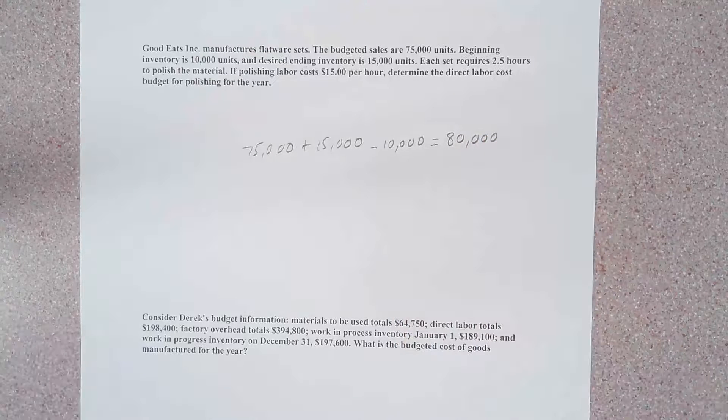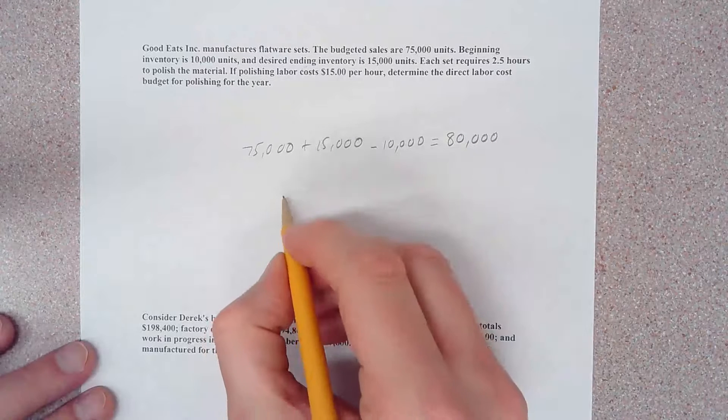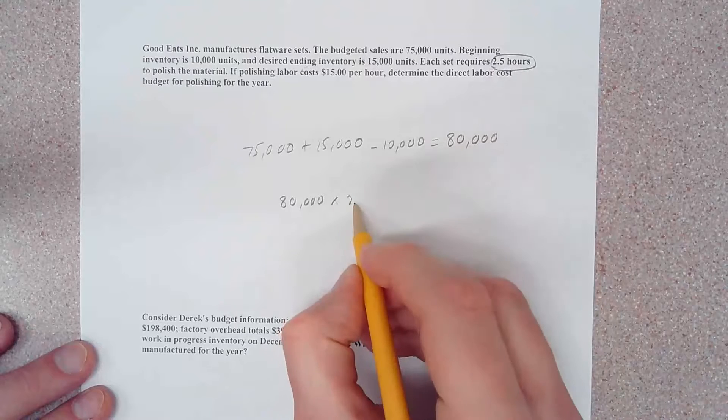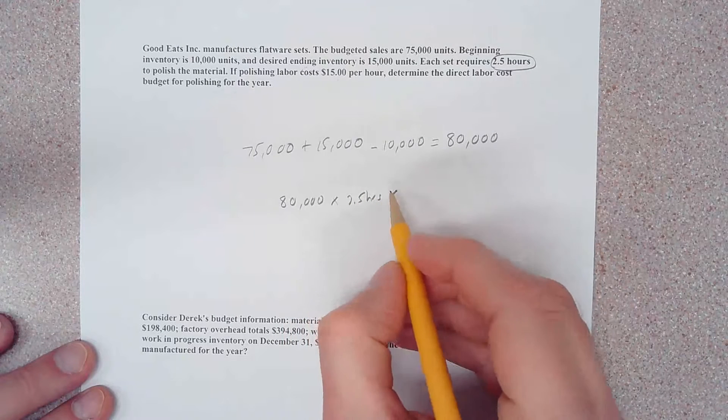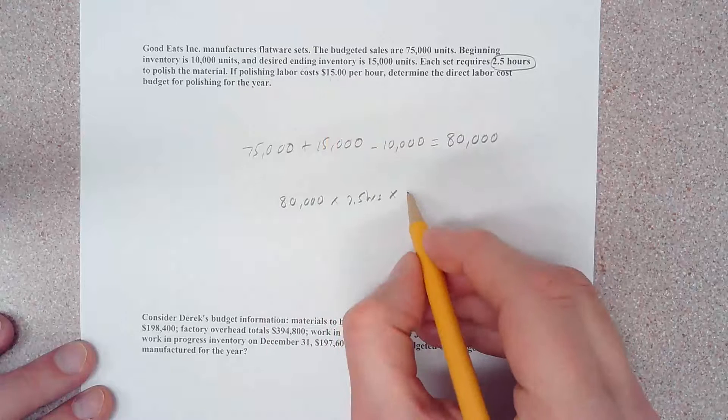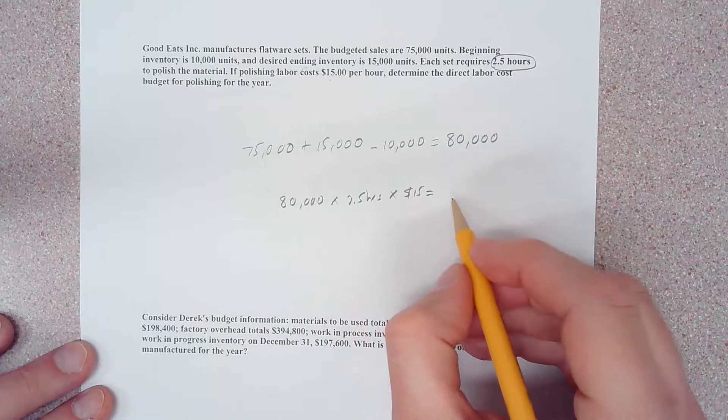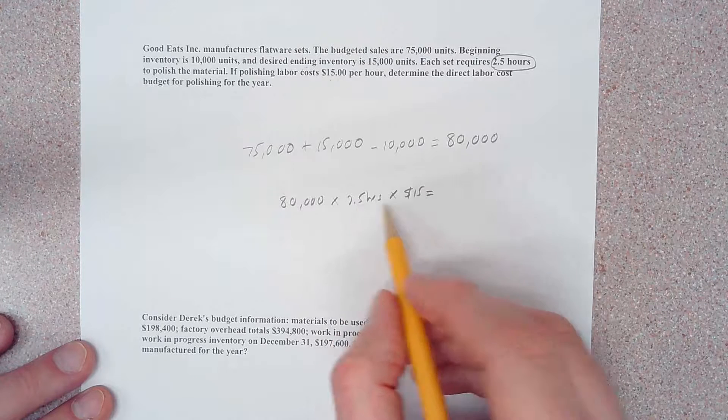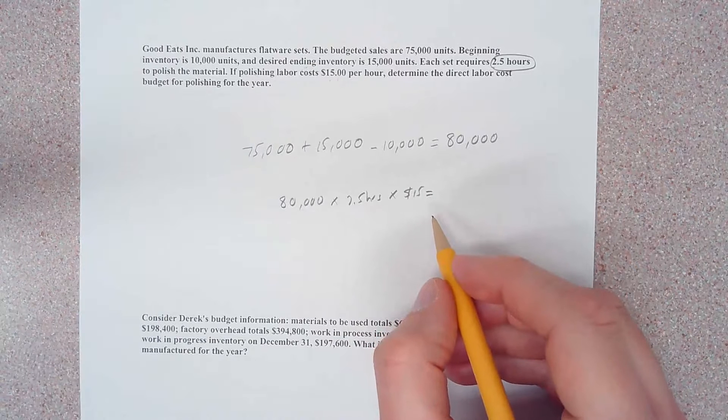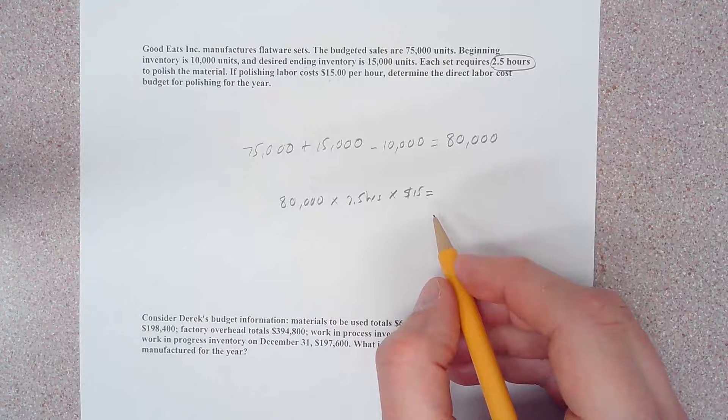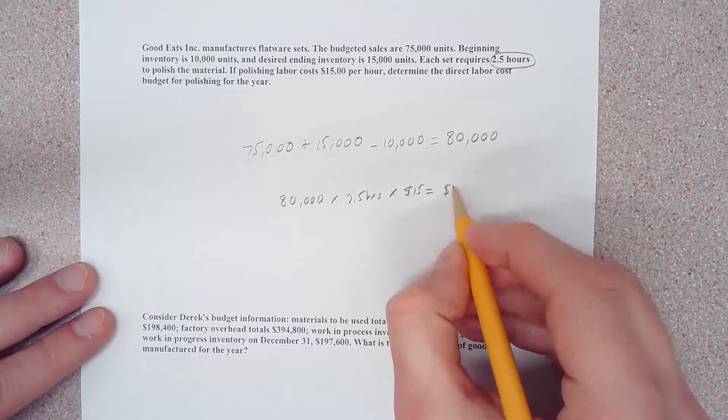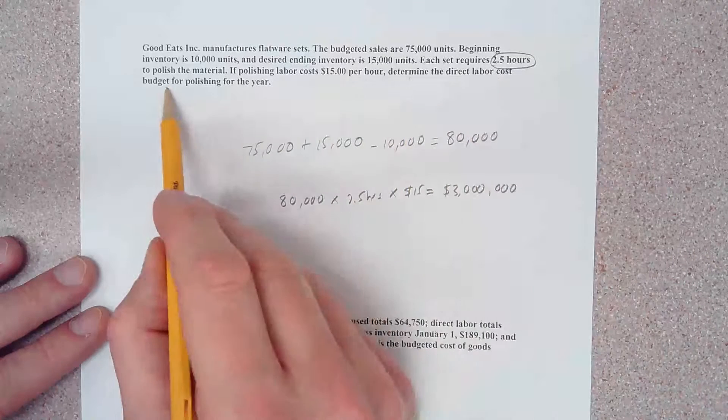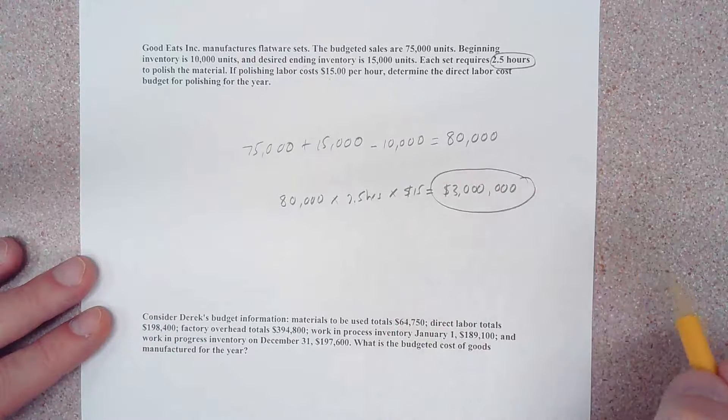So we take the 80,000 units and multiply it first by the amount of time, 2.5 hours, and also by the wage rate of $15 per hour. If we do that, we're going to come up with three million dollars. The direct labor cost budget for polishing for the year—that polishing is going to cost us three million bucks.